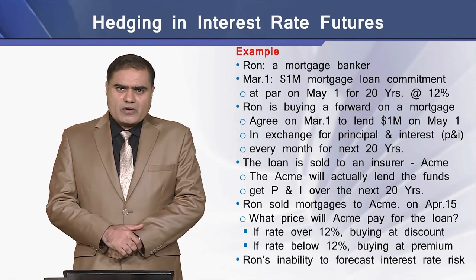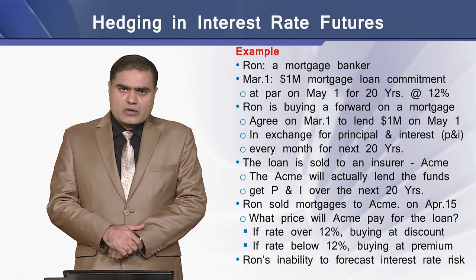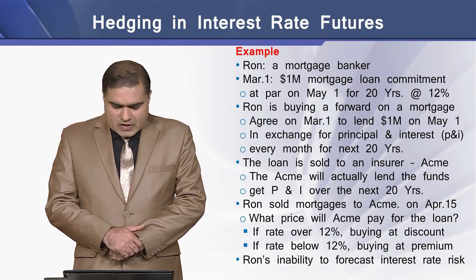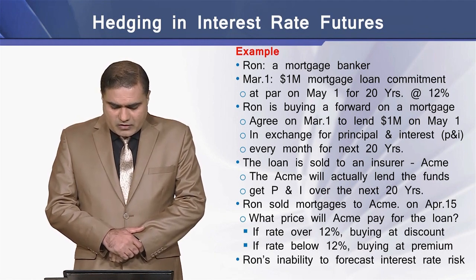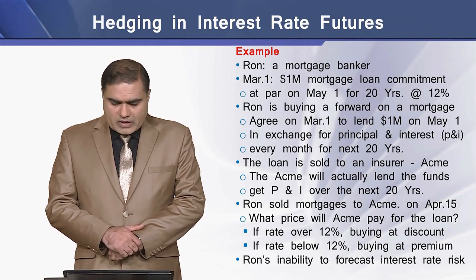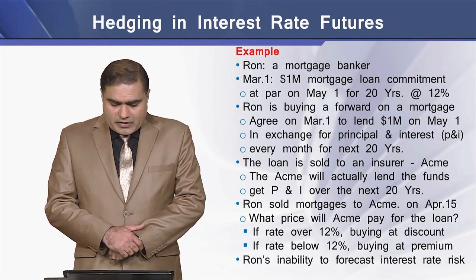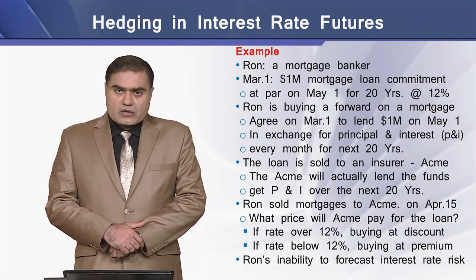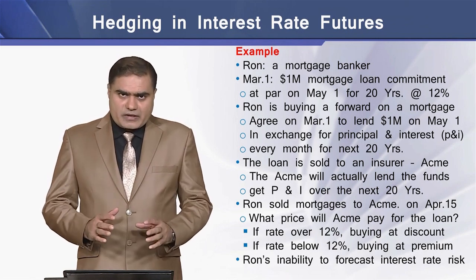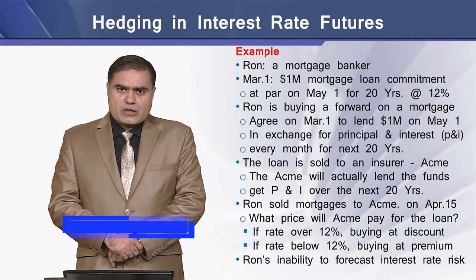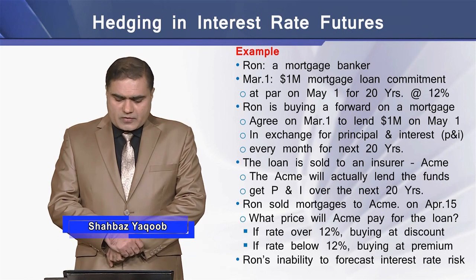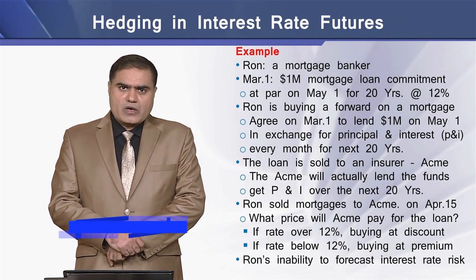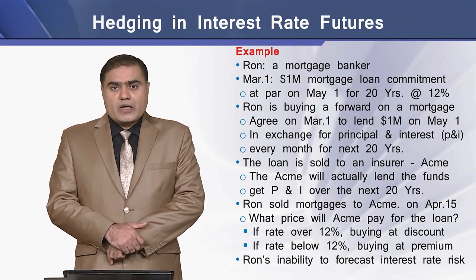We have an example of a mortgage banker known as Ron. On March 1, Ron has a mortgage loan commitment of $1 million at par on May 1 for a term of 20 years at 12% annual rate of interest. Ron is essentially buying a forward on a mortgage — he is agreeing on March 1 to lend $1 million on May 1 in exchange for receipt of principal and interest payments every month for a total period of 20 years.